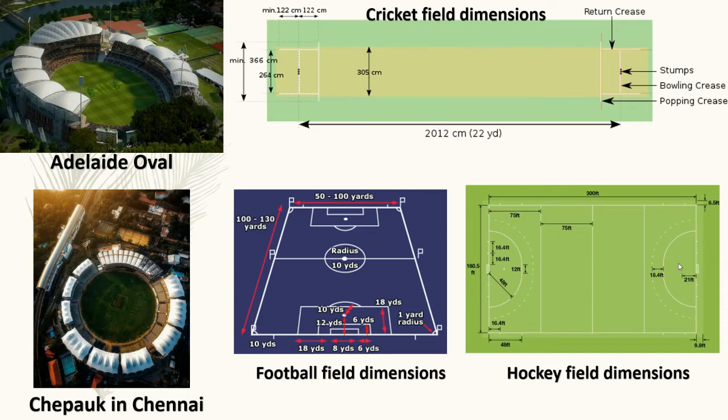Now let's come to another curious characteristic of cricket to be noted: the length of the pitch in a cricket ground must be 22 yards, irrespective of the shape or size of the ground. The cricket ground shape might be oval-shaped, like the Adelaide Oval stadium in Australia, or it may be circular, like the Chepauk stadium in Chennai. However, the specific dimensions of the playing area are laid down, unlike in other team sports like hockey and football which have fixed specific dimensions.